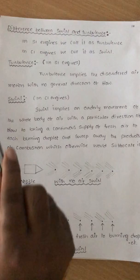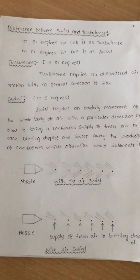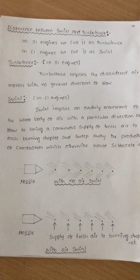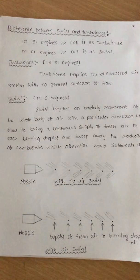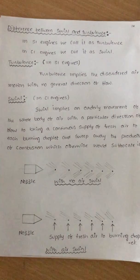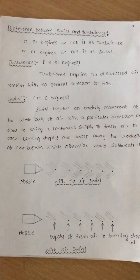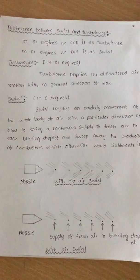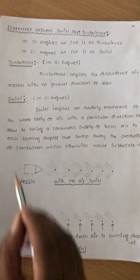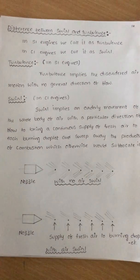In case of SI engines, there is no problem because it is a homogeneous mixture. But in the other case, it is not a homogeneous mixture — the fuel is just entering. So, if we have to supply the desired, orderly movement of the air and if we do not supply the desired movement of air, then combustion is not completed and incomplete combustion will result. So, in order to avoid that situation, we have to supply swirl, not turbulence.